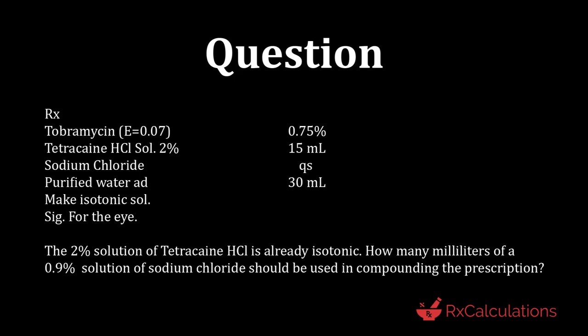In this question, you have a prescription for turbomycin with an A value of 0.07 and a concentration of 0.75%. You have tetracaine hydrochloride solution 2%, 15 ml of it. You have sodium chloride to QS sufficient to get your preparation isotonic, and purified water to get a total volume of 30 ml. Make isotonic — for the eye. The question states the 2% solution of tetracaine hydrochloride is already isotonic. So, how many milliliters of a 0.9% solution of sodium chloride should be used in compounding the prescription?